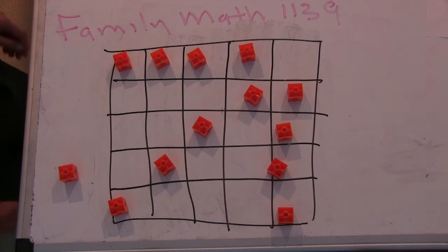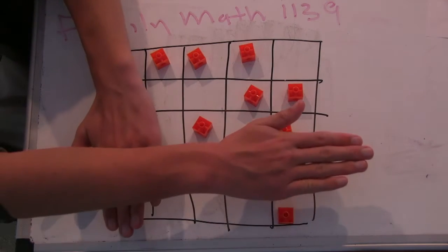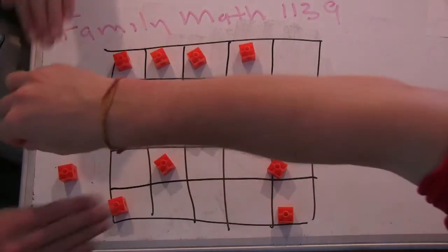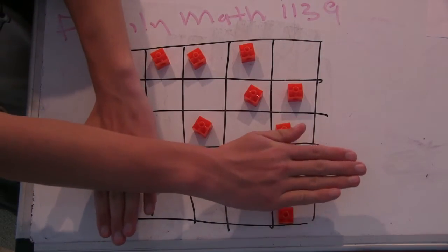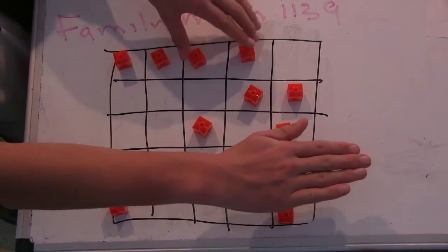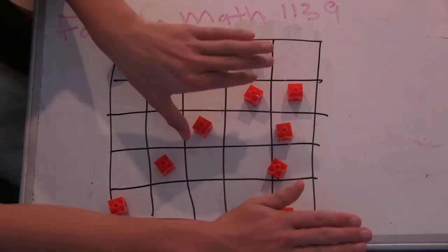So I called this sort of the arrow method. So with 3, this is the one... Let me just move this block out of the way just in case. So for 3, this is the one we found first, where you've got 2 on the row, 2 on the column,